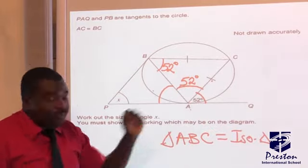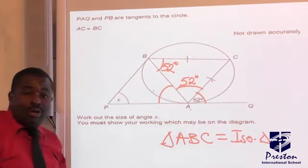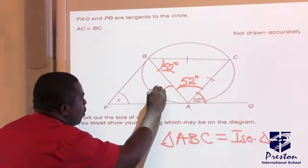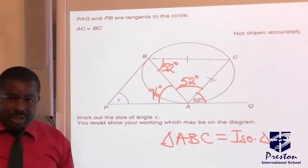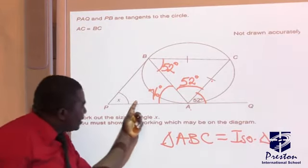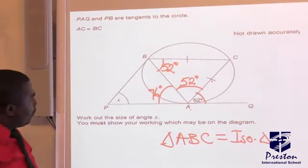So let's add 52 and 52 together so that we can subtract from 180 to get this particular angle. By the time we have 52 and 52 together, we are going to get 104. If we subtract from 180, here we are going to have 76 degrees. Why do we subtract from 180? That is angle on a straight line.